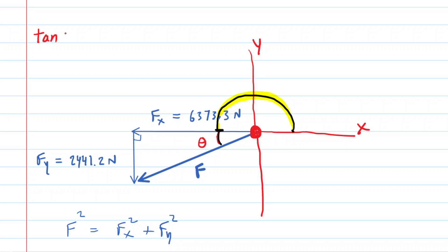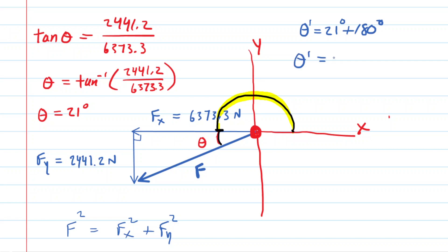Now take a look at that right triangle. You should see that the tangent of that angle theta would equal the side that is opposite, which is the 2441.2, divided by the side that is adjacent, which is the 6373.3. Then to solve for theta, you just do the inverse tangent. So it's going to be the inverse tangent of that ratio. And when you punch that into your calculator, you will see that theta is approximately 21 degrees. And then to get the final answer, we have to add 180 to that. So we'll just do that on the side over here. So the final answer for theta, we'll just call it theta prime, is 21 degrees plus 180 degrees. You'll see that the final angle is 201 degrees. So this is the correct answer for part B.